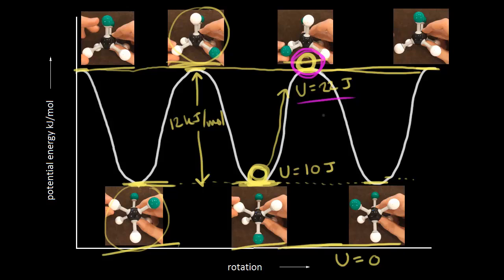Higher in potential energy means less stable; lower in potential energy means more stable. So why do we have a difference in energy between the staggered and the eclipsed conformation? This is called torsional strain. This difference — this 12 kilojoules per mole — is called torsional strain. The source of torsional strain has been a topic of debate. One current theory has to do with molecular orbital theory, but I'm going to go with an older one, which talks about electron pair repulsions. Electron pair repulsions are greatest when the bonds are eclipsed.